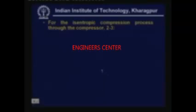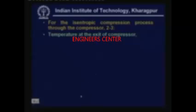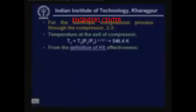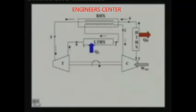Let us find the temperatures at various points. First, the temperature at the exit of the compressor. This is an isentropic compression process, so T3 = T2 × (P3/P2)^((γ−1)/γ). Substituting the values, T3 is found to be 546.4 K. Now we have to find other temperatures T4 and T5, for which we will use the definition of heat exchanger effectiveness.